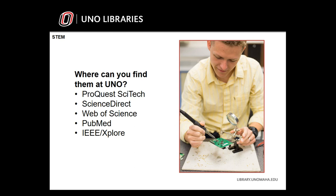UNO Cris Library has excellent online databases for accessing cutting-edge STEM scholarship. The best place to start are these top five databases: ProQuest SciTech, ScienceDirect, Web of Science, PubMed, and IEEE Explore. These databases focus specifically on STEM, but we have access to many more interdisciplinary databases as well. With millions of peer-reviewed articles and books, you're sure to find information that is timely, relevant, and scholarly for your project.